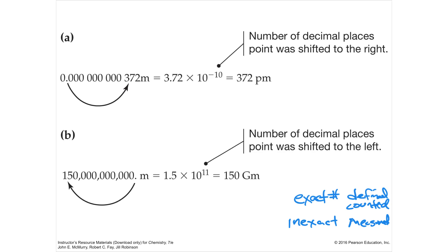Scientific notation is very useful in science because we're dealing with very, very small things and very many things. So you have huge numbers, either small or big, and just writing them down is cumbersome. So scientific notation makes a lot of sense to use.